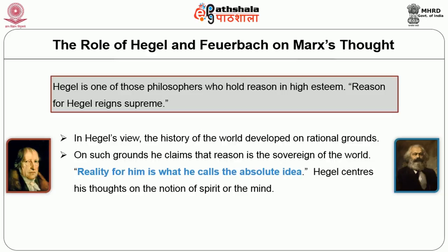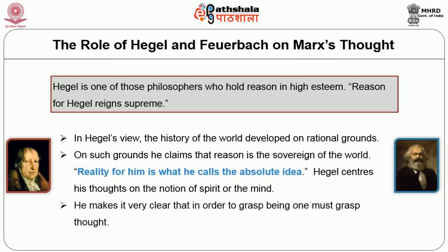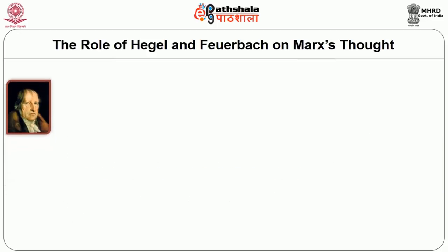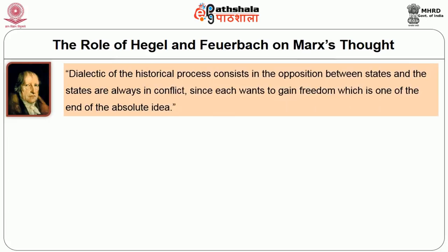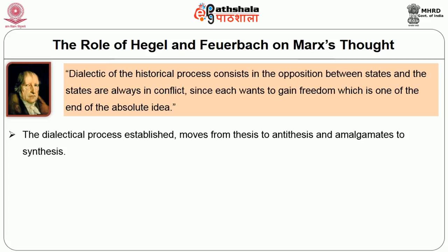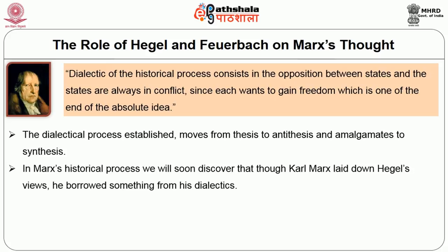Hegel centers his thoughts on the notion of spirit or the mind. He makes it very clear that in order to grasp being one must grasp thought. Hegel uses a dialectical process in establishing a rational world history, where the dialectics of historical processes consists in the opposition between states — states always in conflict since each wants to gain freedom, which is one end of the absolute idea. The dialectical process moves from thesis to antithesis and amalgamates to synthesis. Though Marx laid down Hegel's views, he borrowed something from his dialectics.